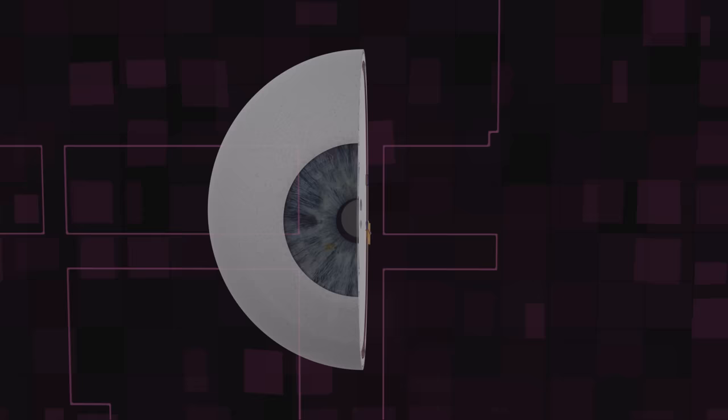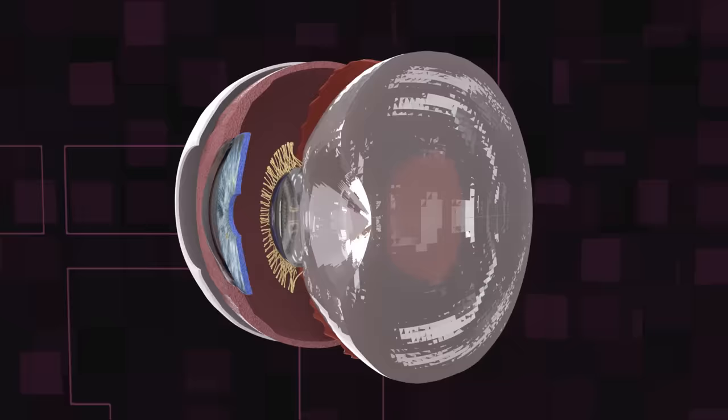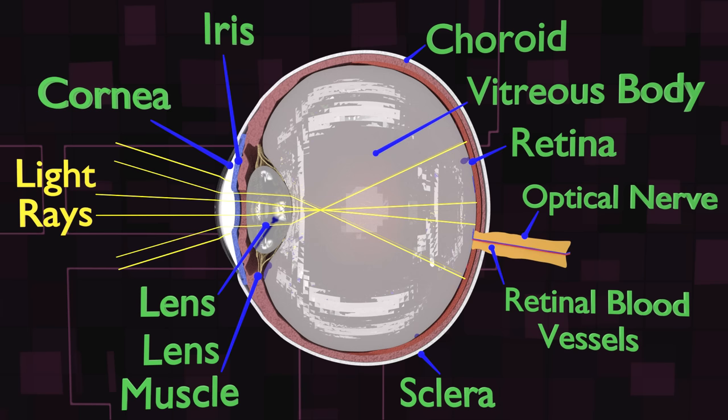But before we give you an exploded diagram of the camera and get into all of its intricate details, let's first take a look at the human eye. With the human eye, the cornea is the outer lens that takes in a wide angle of light and focuses it. Next, the amount of light passing into the eye is limited by the iris. A second lens, whose shape can be changed by the muscles around it, bends the light to create a focused image.